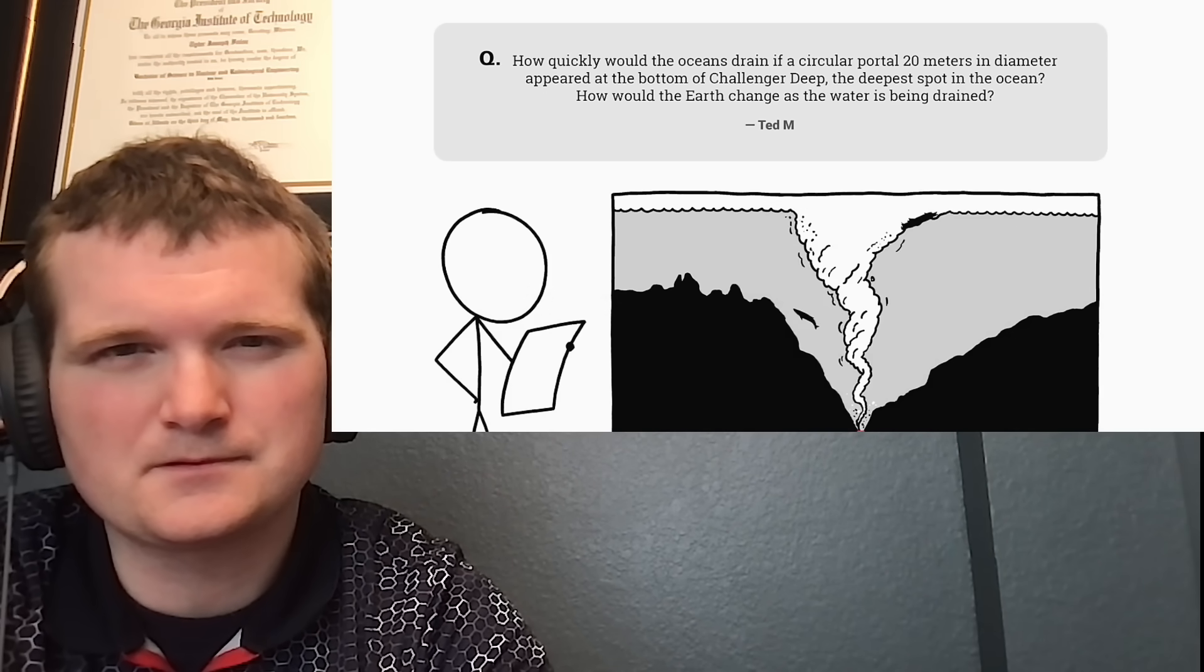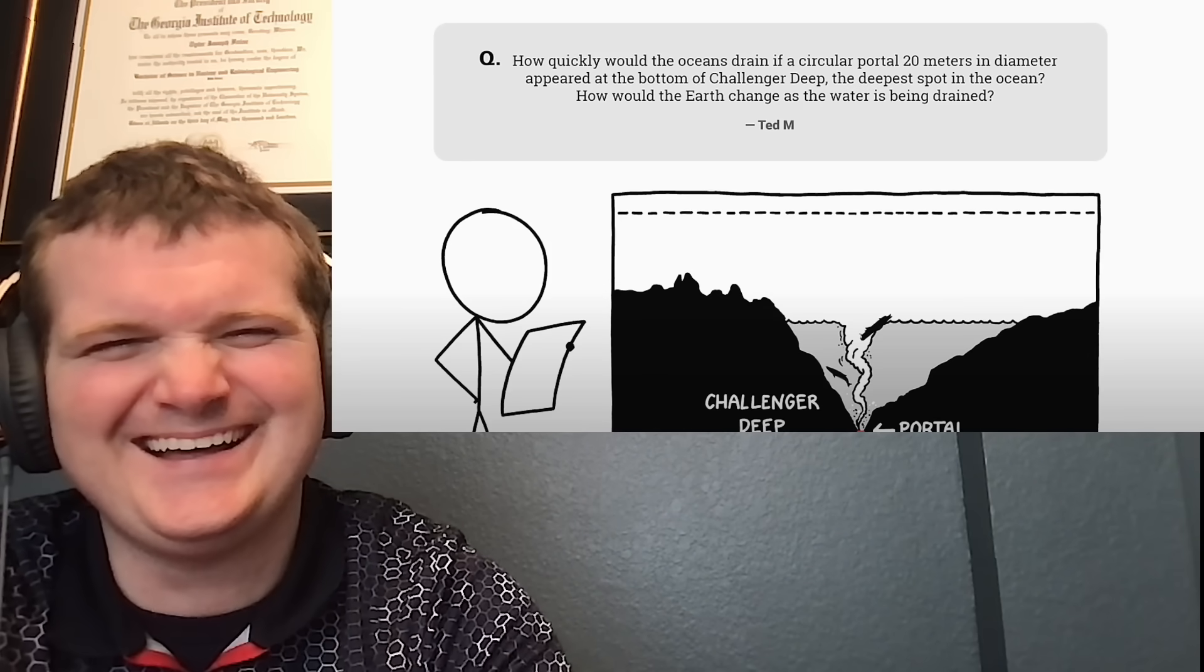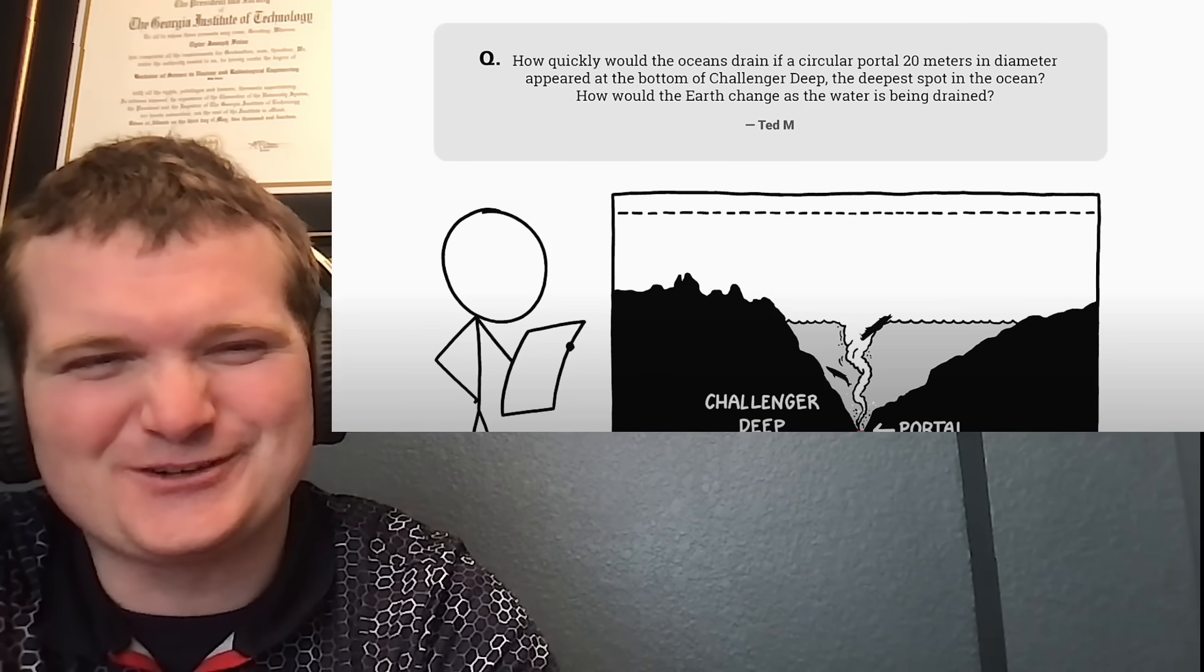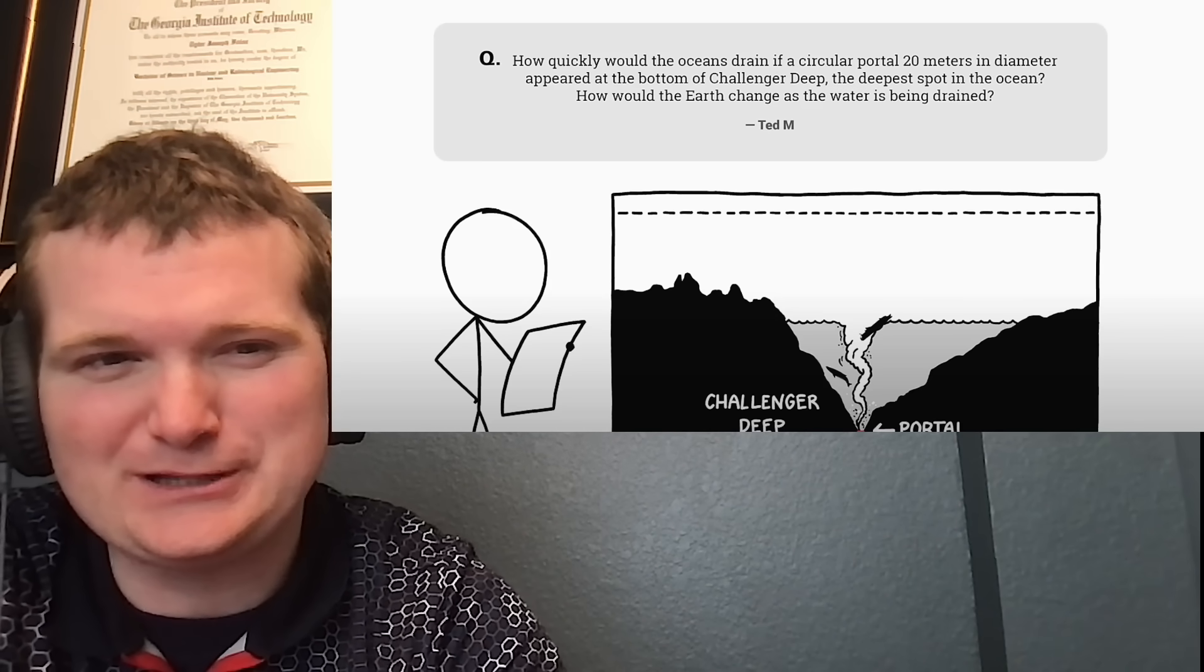This question comes from Ted, who asks: How quickly would the oceans drain if a circular portal 20 meters in diameter appeared at the bottom of Challenger Deep, the deepest spot in the ocean? How would the Earth change as the water was being drained?